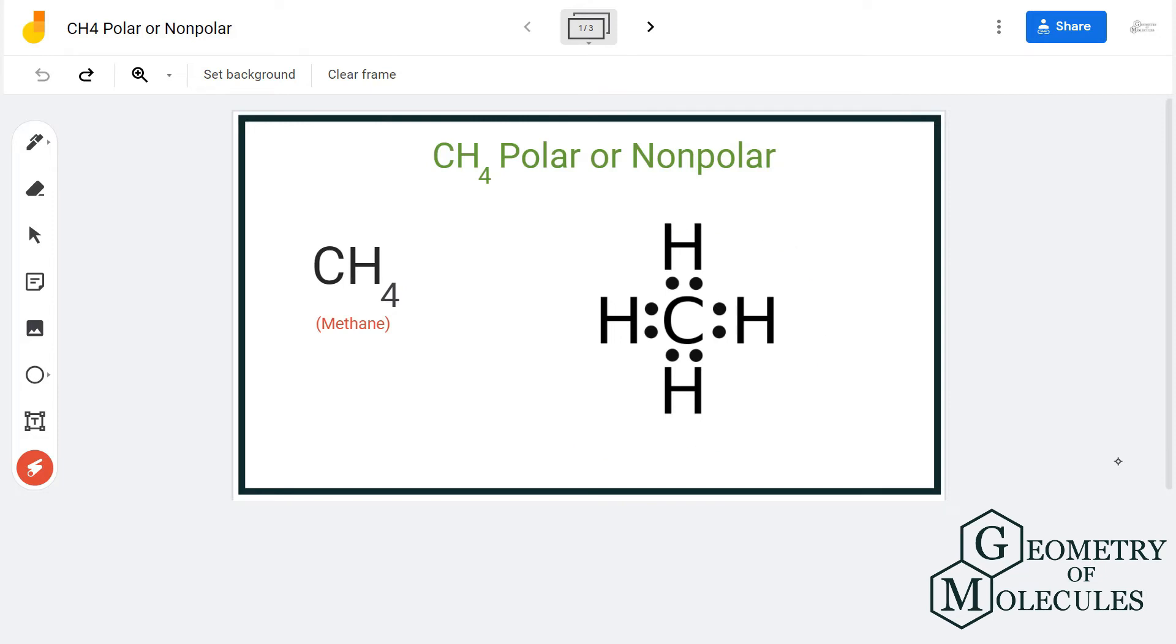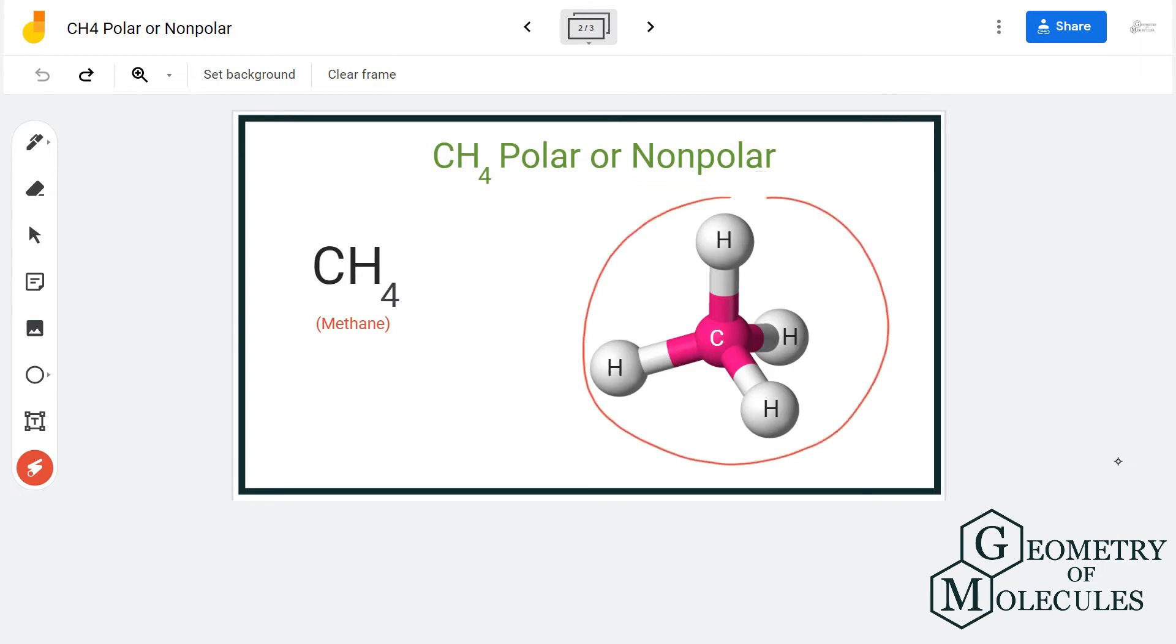Looking at this arrangement, we kind of think that this molecule could be a non-polar molecule because generally the molecules that have symmetry and no lone pairs are non-polar molecules. As you can see here, there are no lone pairs and the shape is quite symmetrical.